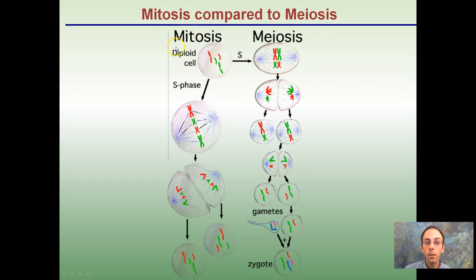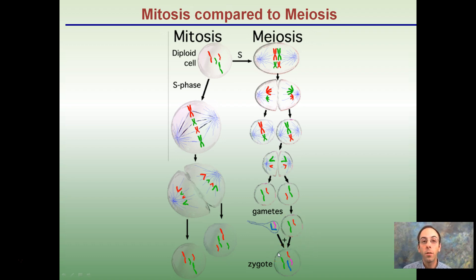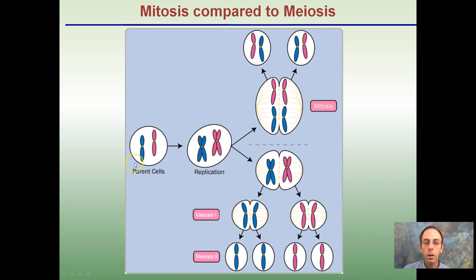Mitosis starts with a diploid cell — a normal cell in your body — and makes two identical copies. Meiosis takes that same initial cell and ends up with four cells, each having half of the total genetic material. From the replication phase, mitosis forms two identical copies of the parent cell, while meiosis forms four total cells each with half the genetic material.